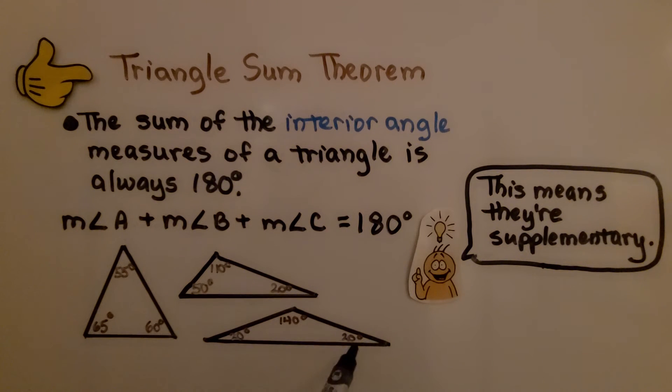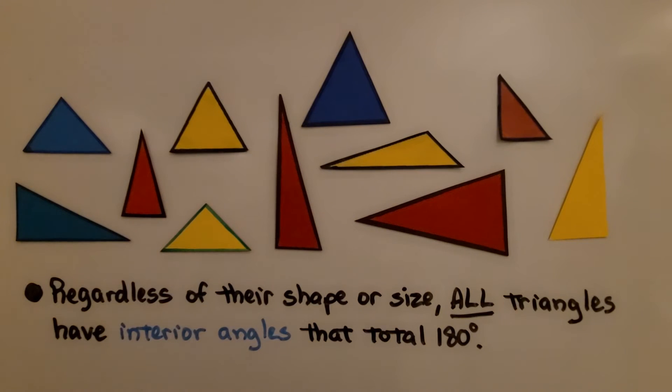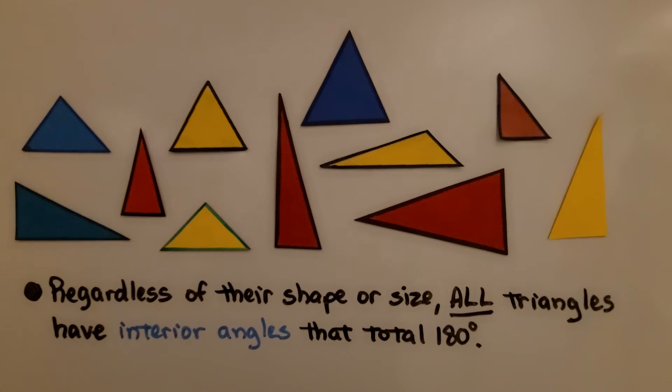Here we have 140, and 20, and 20. That equals 180. Regardless of their shape or size, all triangles have interior angles that total 180 degrees.